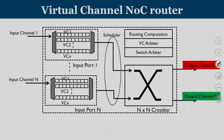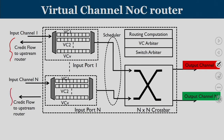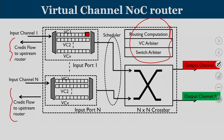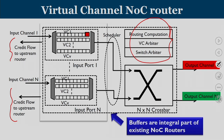If you look from a different perspective, credits flow from the buffers to the upstream. Credits basically represent the number of free buffers inside your virtual channels. Once you pass the credit to the upstream, your packets come and reside inside the buffers, and then these packets move to the corresponding output channel based upon the control logic implemented in the router. Buffers are an integral part of existing NOC routers because buffers hold your packets.